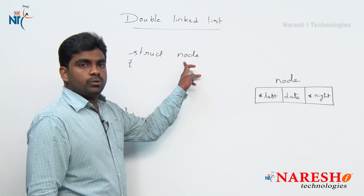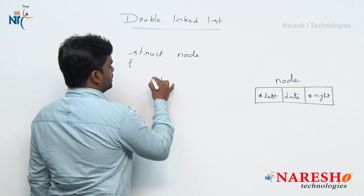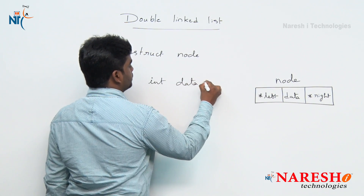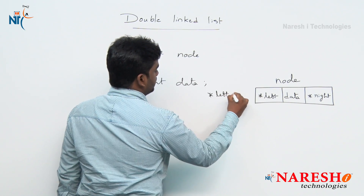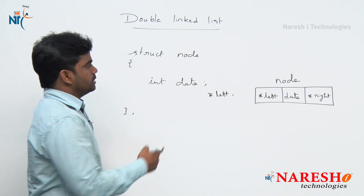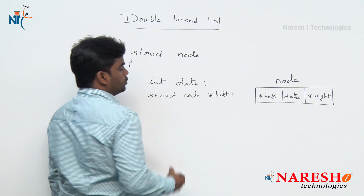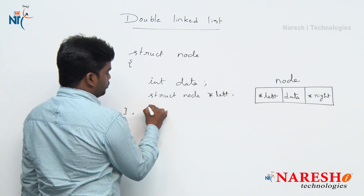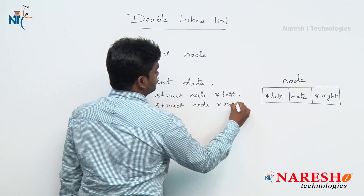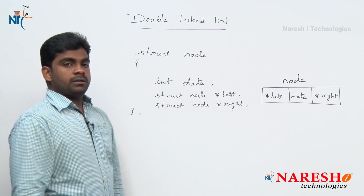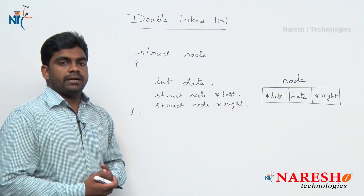In the struct node definition we have to define three variables: first is an integer data field, second is a pointer of type struct node (because one node points to another node), and one more pointer of type struct node star. This is the simple node structure.